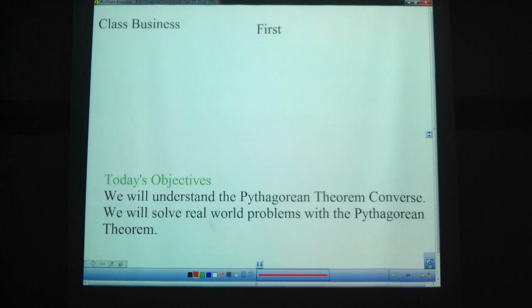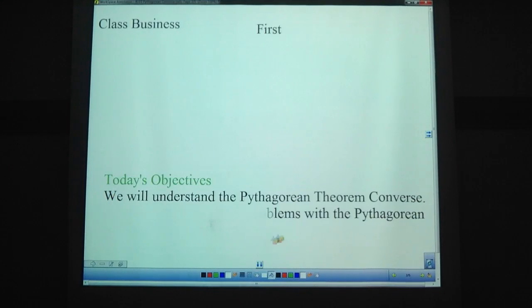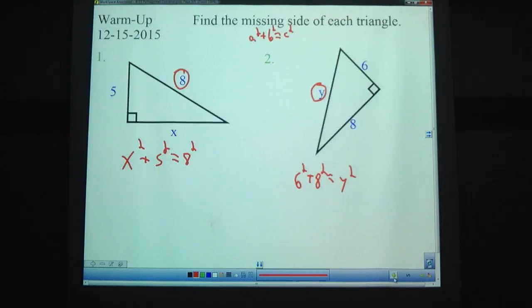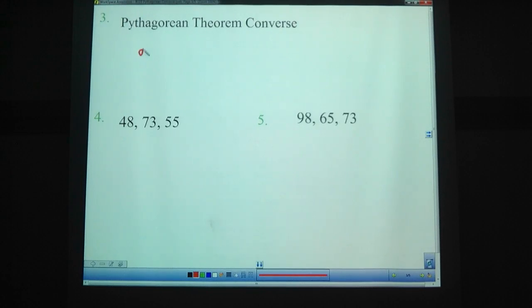The objective is to understand Pythagorean theorem converse. We didn't get to the real world problem because we had that shortened day. Pythagorean theorem converse is where we have a right triangle and we do a squared plus b squared equals c squared. The converse is that we check when we have all three sides already. We check if a squared plus b squared equals c squared. If it does, then that means it's a right triangle.